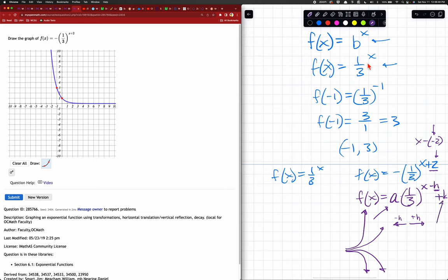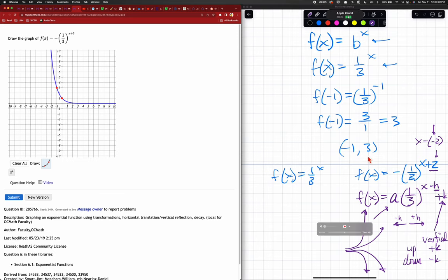The k is going to be a vertical shift. And if k is positive, then, I'm sorry, if k is positive, then that's up and down is a negative k. In this case, we don't have a k. So there's no vertical shifting. So what does this thing look like?